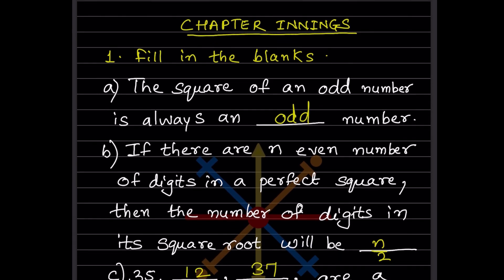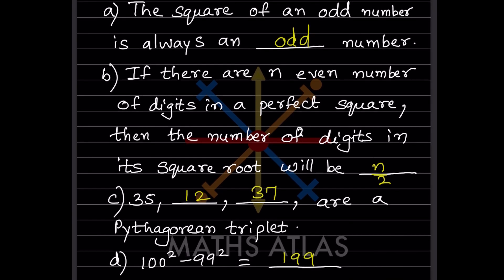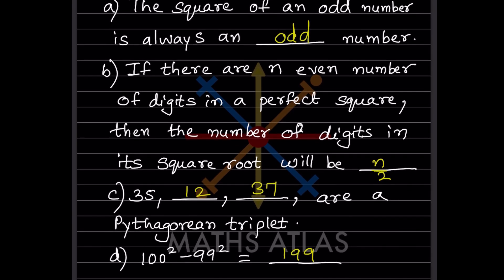If there are n even number of digits in a perfect square, then the number of digits in its square root will be n by 2.